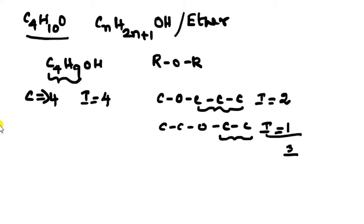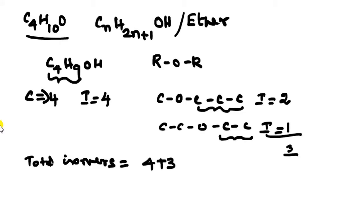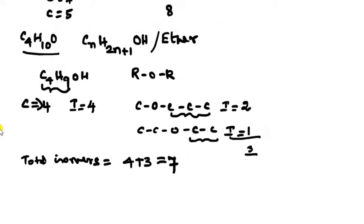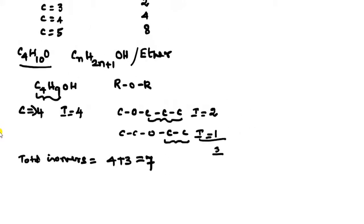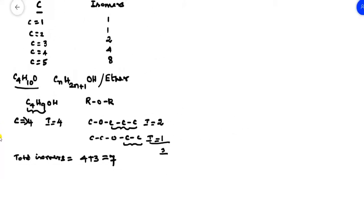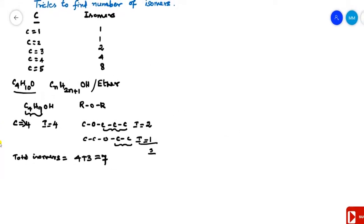So the total number of isomers for the molecular formula C₄H₁₀O is 7 — four from alcohol and three from ether.